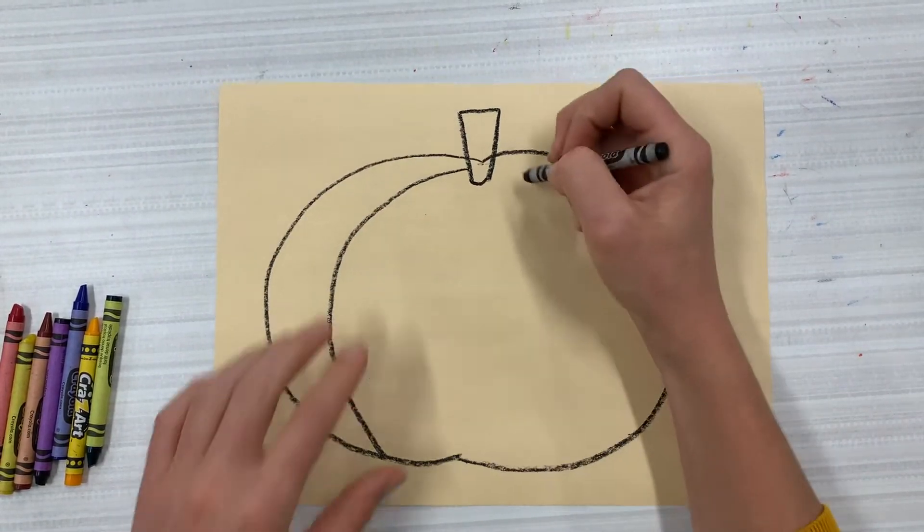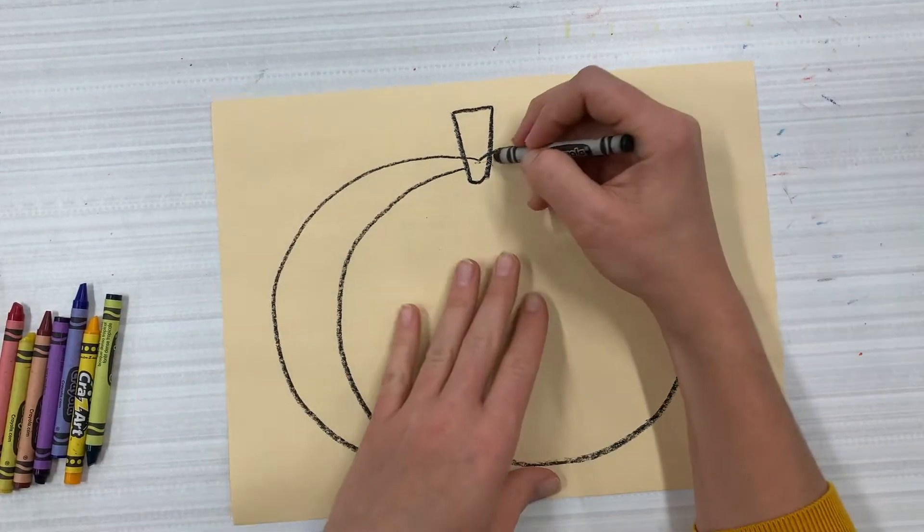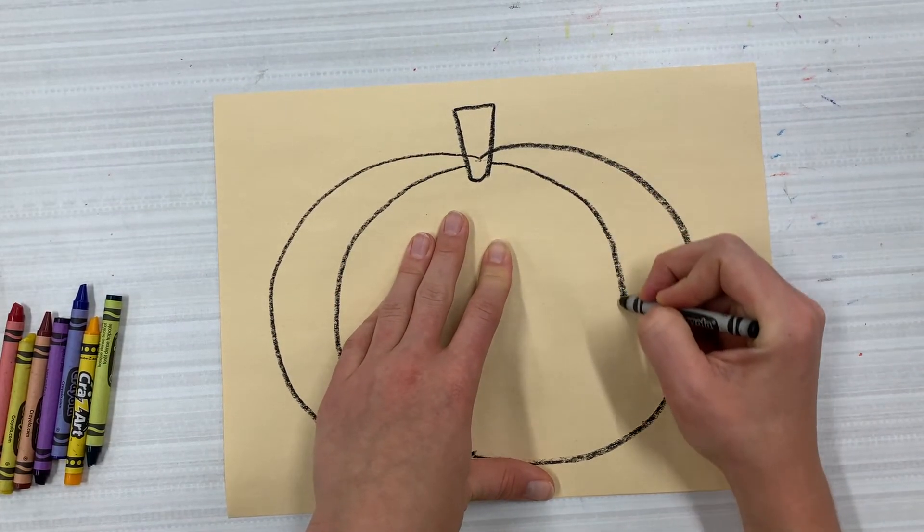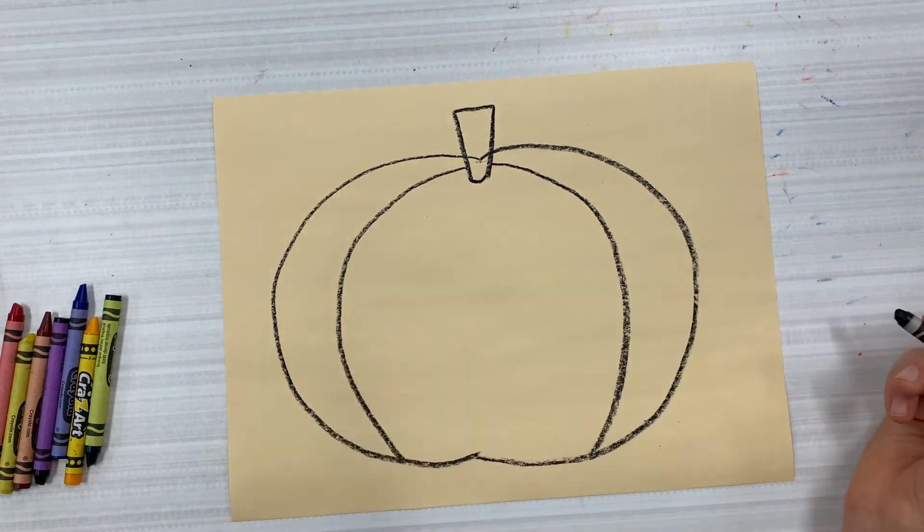So I start at the top and then I end at the bottom, and the curved line kind of follows the one on the outside.